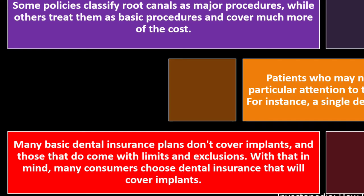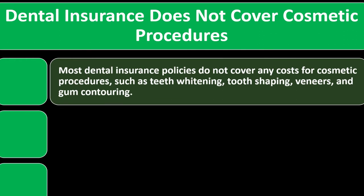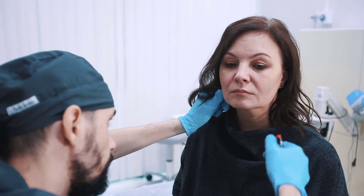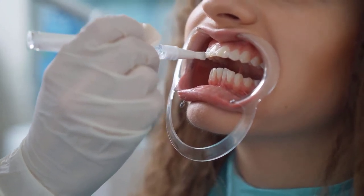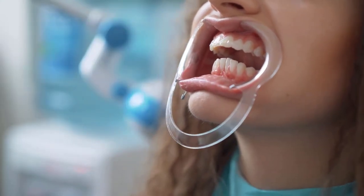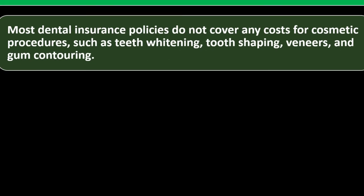Many basic dental insurance plans don't cover implants, and those that do come with limits and exclusions. Dental insurance does not cover cosmetic procedures. In the United States, some cosmetic procedures are becoming standard — teeth whitening is almost routine — but they're still categorized as cosmetic. Most dental insurance policies do not cover costs of cosmetic procedures like teeth whitening, tooth shaping, veneers, and contouring.